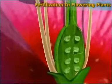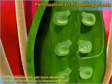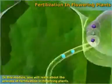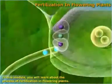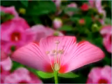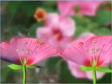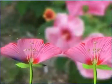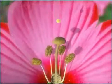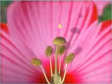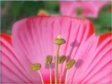Fertilization in flowering plants. In this module, you will learn about the process of fertilization in flowering plants. Fertilization in flowering plants is defined as the fusion of a pollen grain with an ovule to form a diploid zygote, which later develops into an embryo.